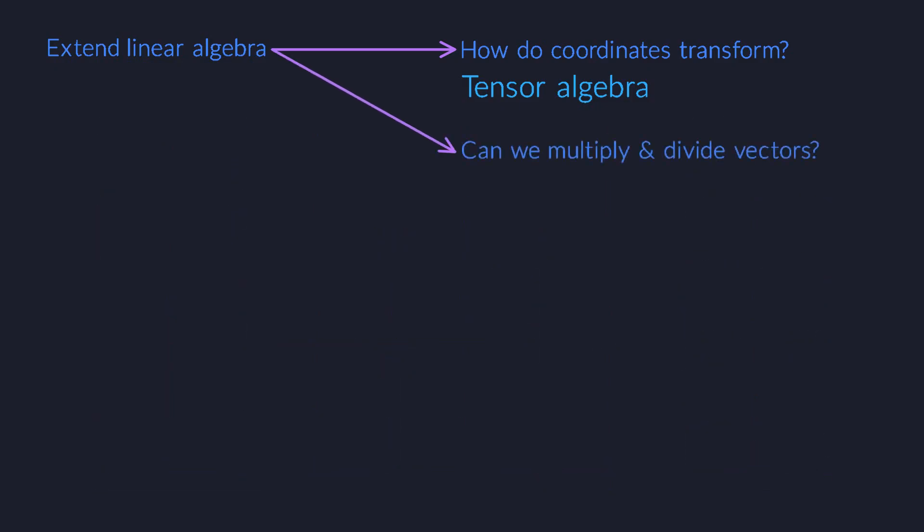Second, we want to turn vectors into numbers. We already did this for 2D vectors. We found a multiplication that allows us to divide by vectors, and the resulting 2D number system is called the complex numbers.